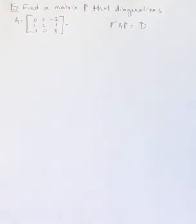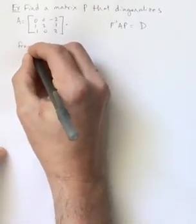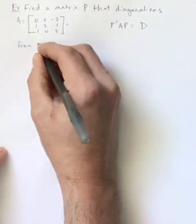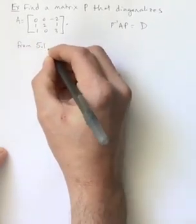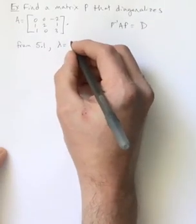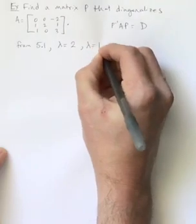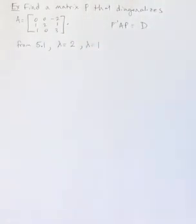The way that we would start this problem is that we would find the eigenvalues for this. We've already found the eigenvalues for this particular matrix. This was in the last section. But we do get eigenvalues of lambda equals 2 and lambda equals 1. Those are the two eigenvalues that we have for that.